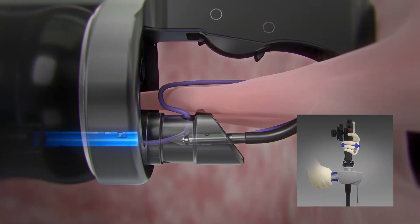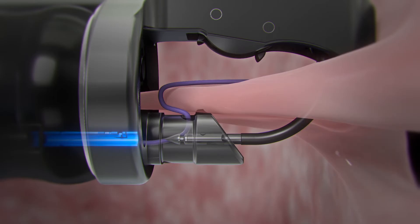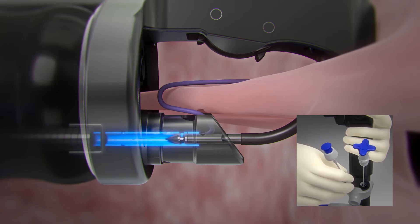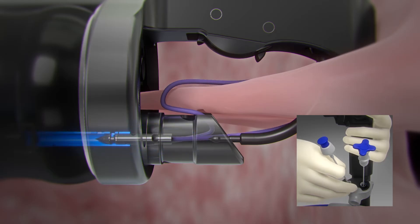Close the needle driver handle to pass the anchor and suture through tissue. Advance the anchor exchange catheter over the anchor until the locking mechanism engages. Without pressing the blue button, pull the anchor exchange catheter back to disengage the anchor from the needle body.